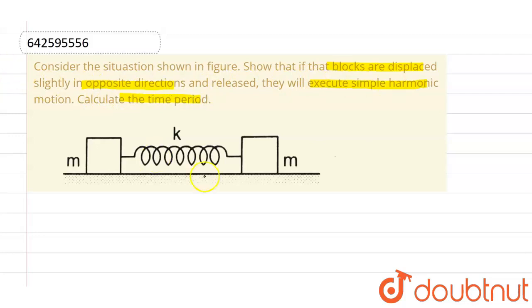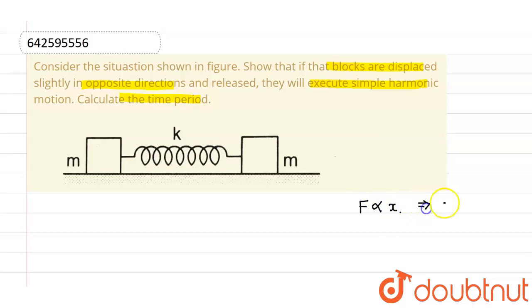What we know about simple harmonic motion is that if the force is directly proportional to the displacement from the mean position, then such type of motion is simple harmonic motion.